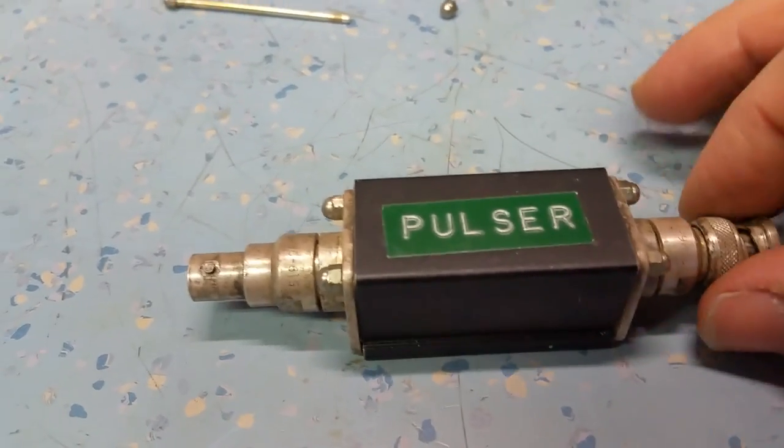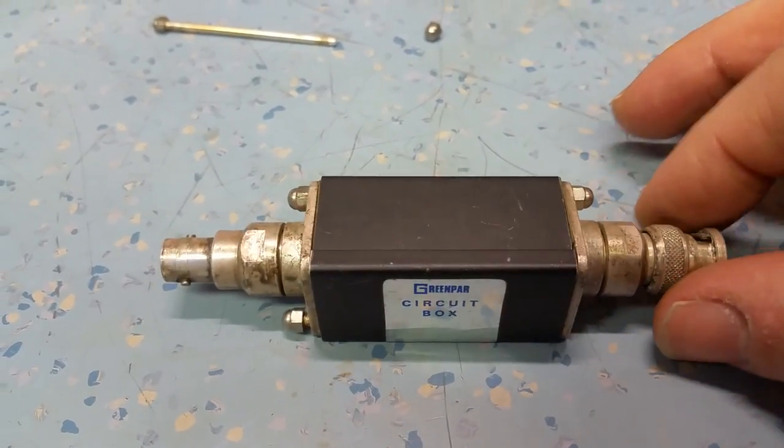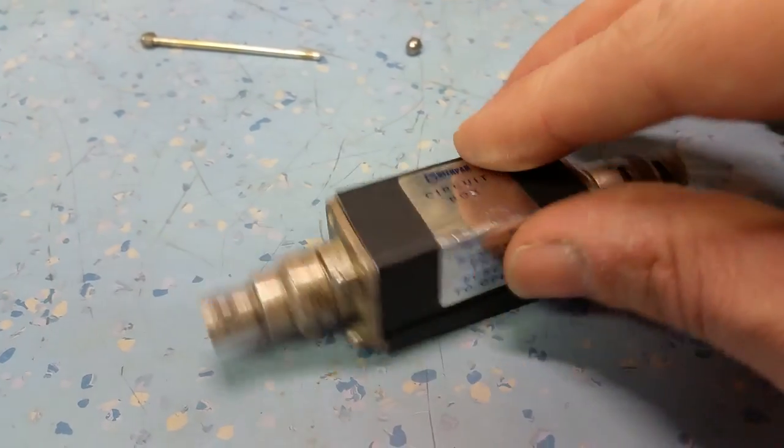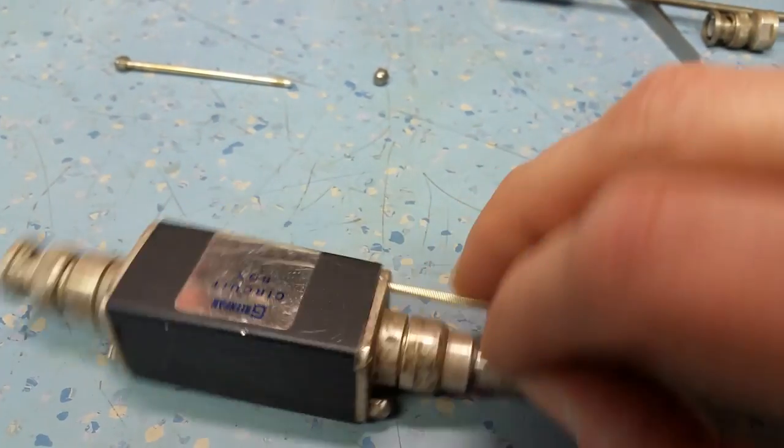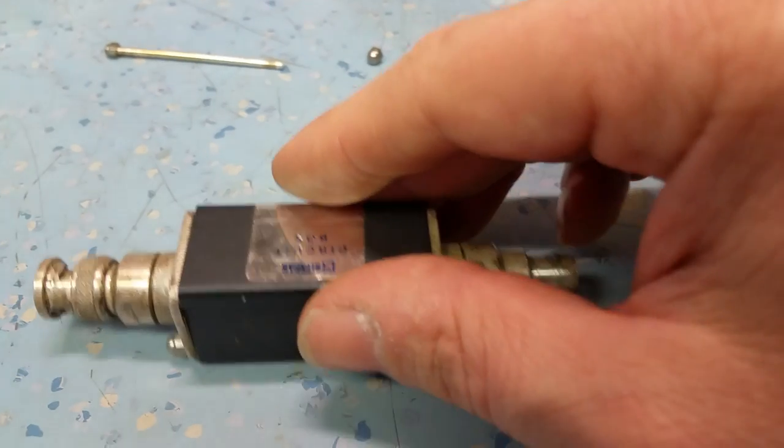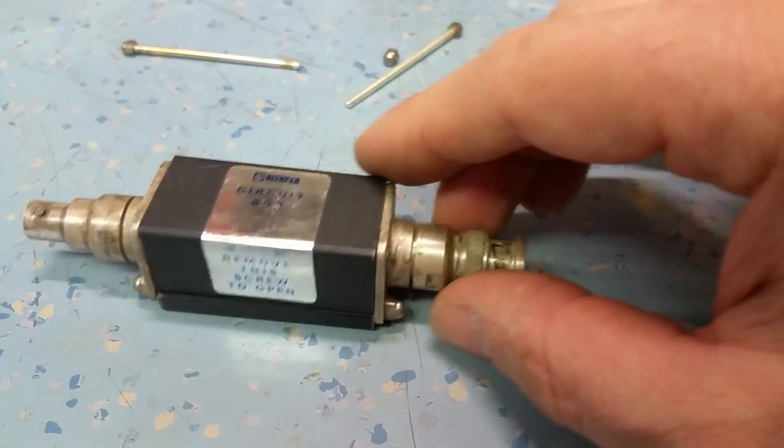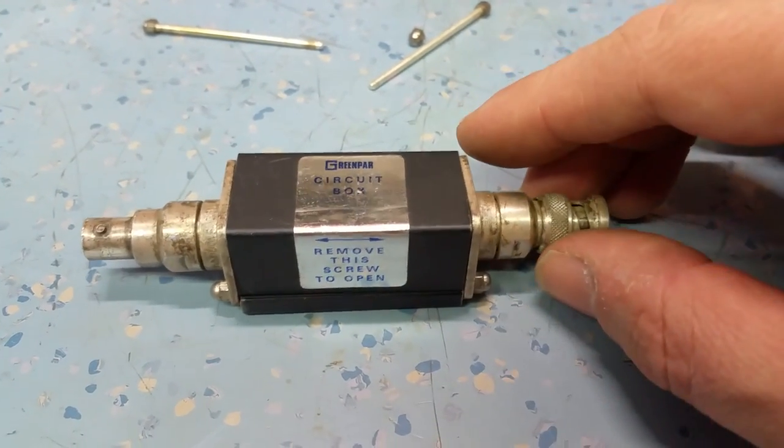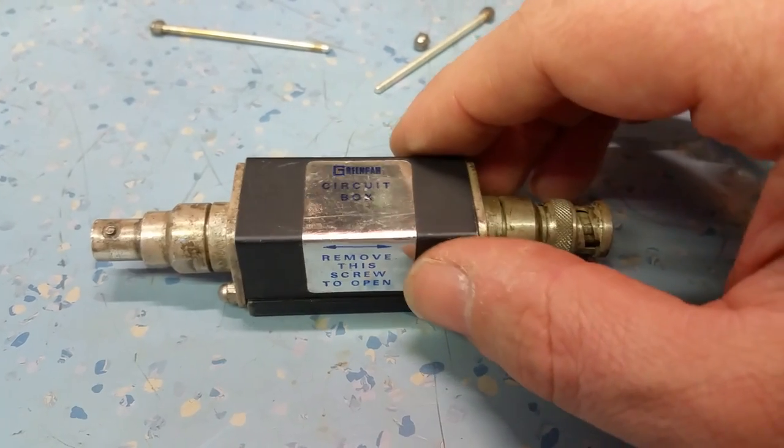Now this has had pulsar written on it. And I was thinking, I wonder if it's a tunnel diode pulsar. So I thought well that will be something worth taking home because tunnel diodes are quite hard to get hold of now. And they're very useful for testing the rise times of oscilloscopes.